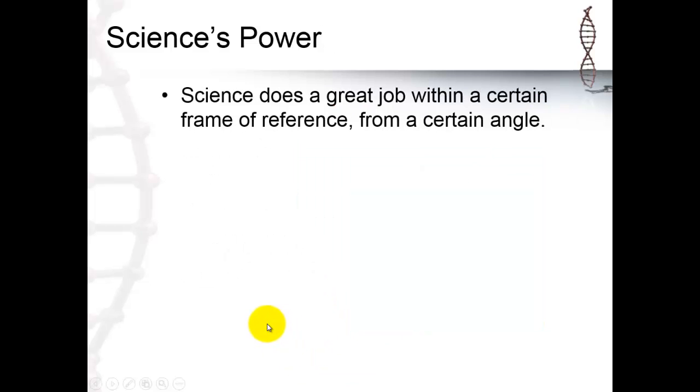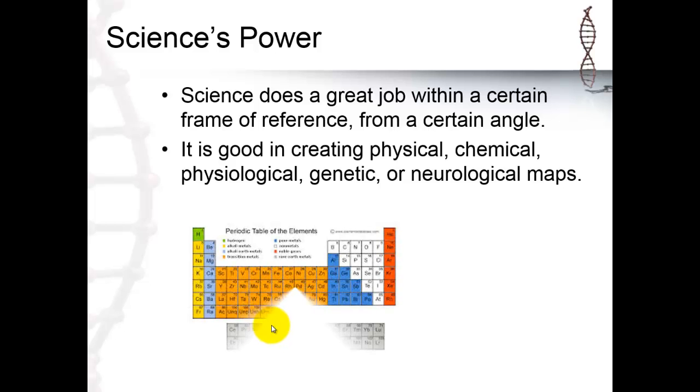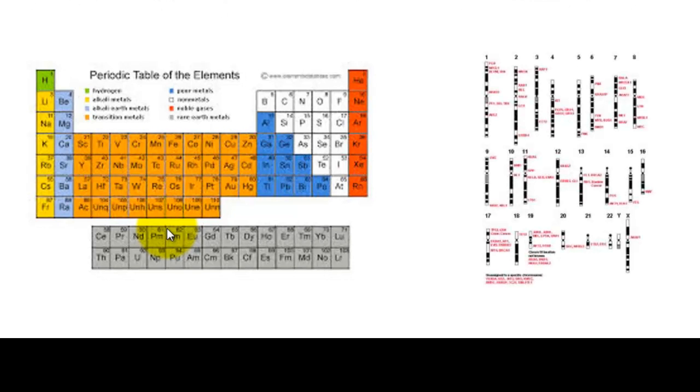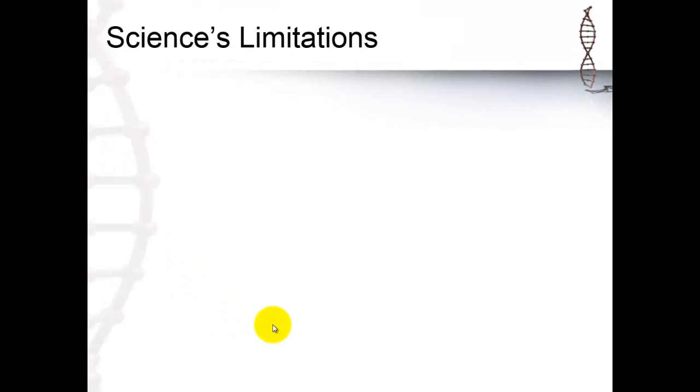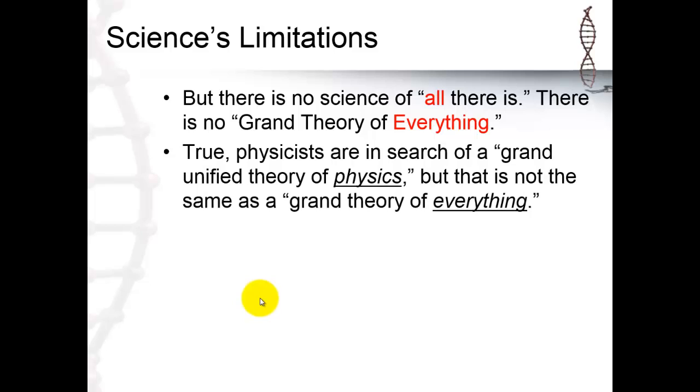It does a great job within a certain frame of reference, from a certain angle. And it's good in creating all these kinds of maps. Whether it's the periodic table of the elements or the human genome project, it makes great maps. But there is no science of all. There is no grand theory of everything. Let no one fool you. No one has ever invented a theory that explains everything. I know physicists are in search of a grand unified theory of physics, but it's not the same as a grand theory of everything.